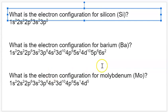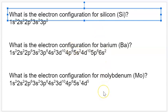Molybdenum is a special case because, if you recall, it's in the same column as chromium — one of those exception elements. So instead of having 5s2, 4d4, we take one electron out of the s and put it in d so it can have a half-full orbital and be more stable, giving us 5s1, 4d5.